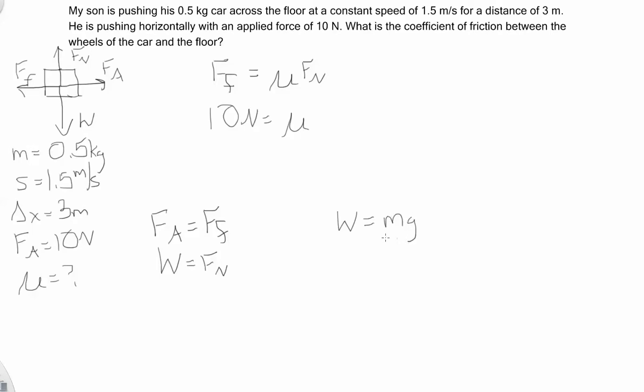And weight is mass times gravity. And so, weight is equal to m. Mass was 0.5 kilograms. And gravity is 9.1 meters per second squared. And so, to solve for weight, just multiply the two numbers together, and I get a weight of 4.905 newtons. Okay, so that's my weight. That's also my normal force, so I can plug that in up here.